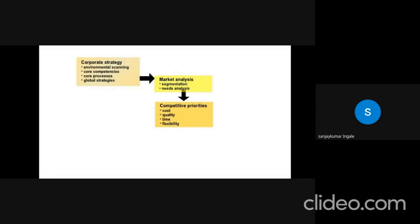There are three corporate strategies: environmental scanning, core companies, core process and global strategies. Market analysis. Corporate is connected to market analysis, segmentation and needs analysis. And market analysis is connected to the competitive priorities such as, as we mentioned in the last slide, cost, quality, time and flexibility.